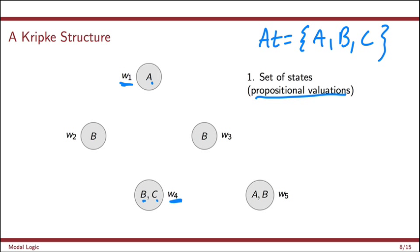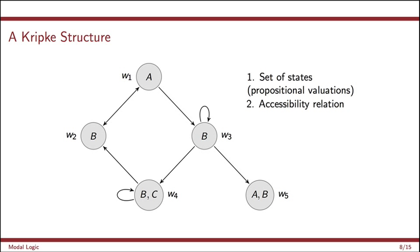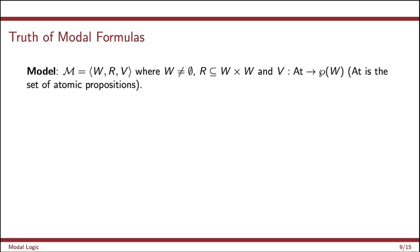Then on top of the set of states, we give an accessibility relation. So here we just draw, if there's an arrow going from W3 to W5, for example, we denote this by W3 is related to W5. And we'll say W3 can see W5 or W5 is accessible from W3. So that's it. This is a Kripke structure. Strictly speaking, this is what's called a Kripke model.